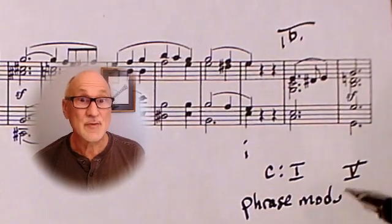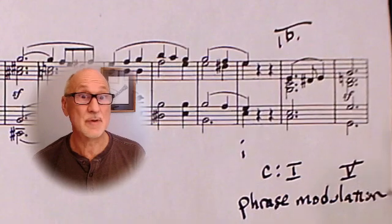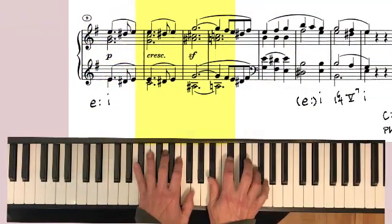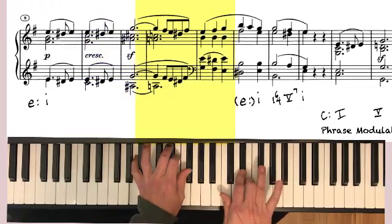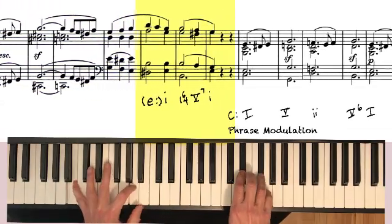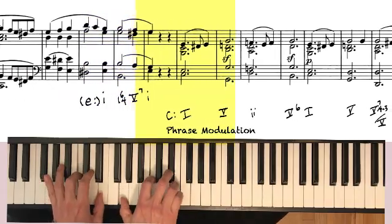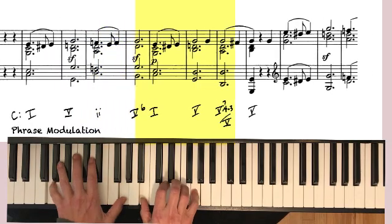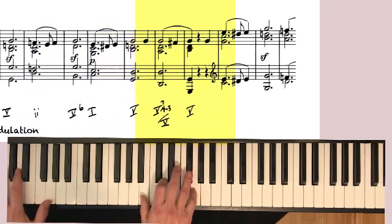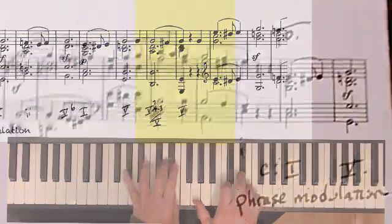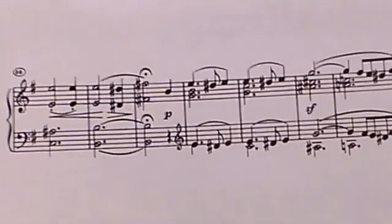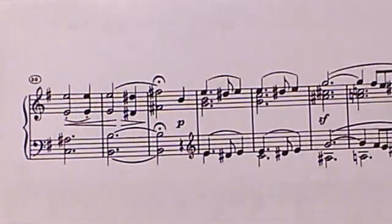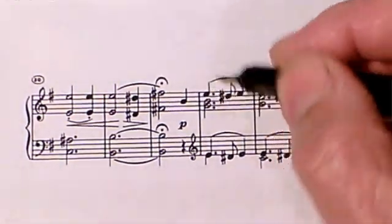The composer ends a phrase in one key and then just starts up a new phrase in a new key. By the end of this section, Beethoven is going to modulate back to E minor around measures 30 to 33. Now this modulation is a bit more complicated, so we'll skip it for now and come back to it later.